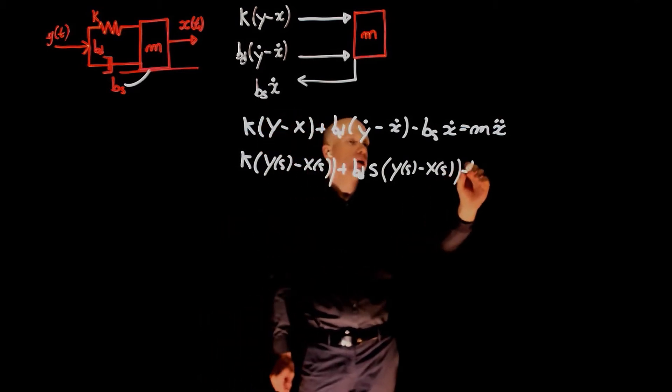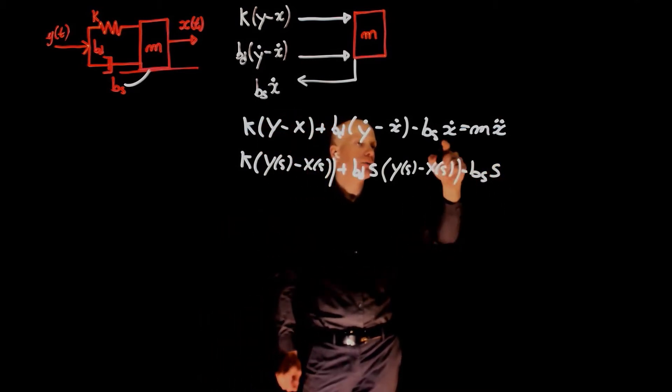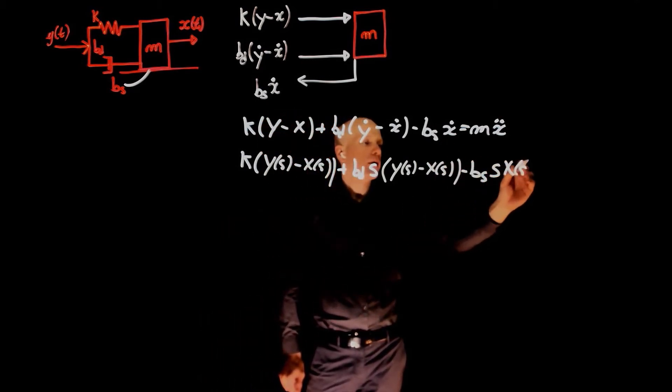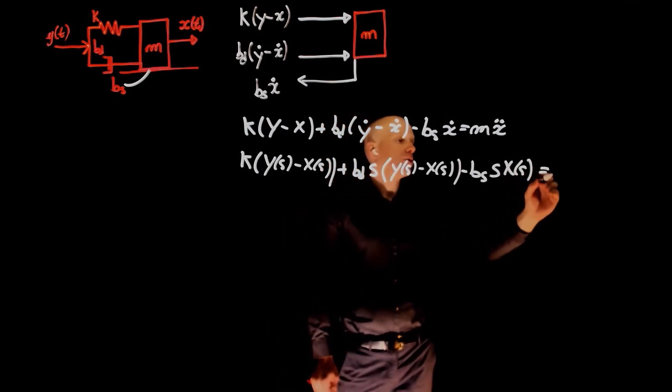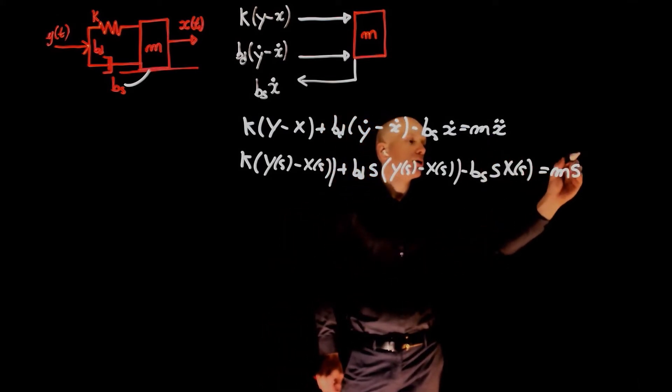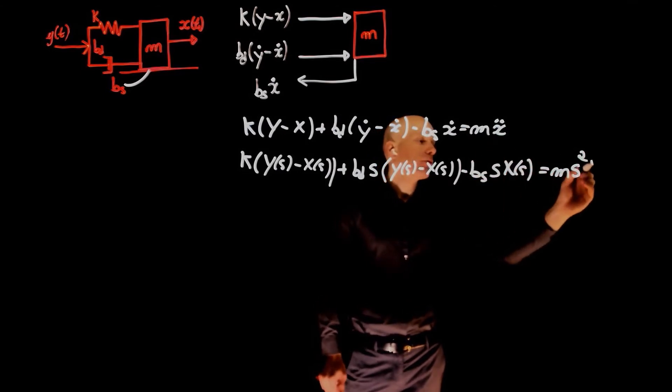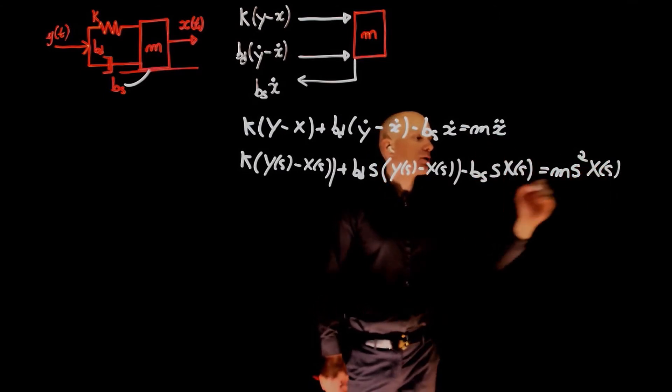Same goes for bs, negative bs, s, derivative of x(s). And this is equal to m times s squared, second derivative of x(s).